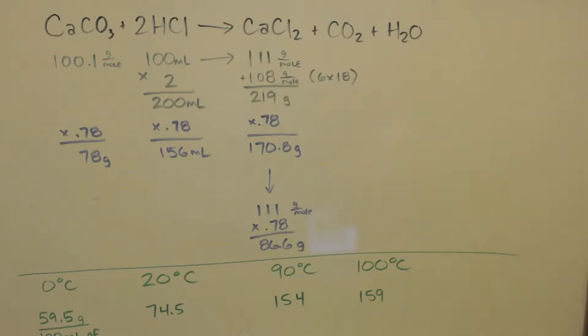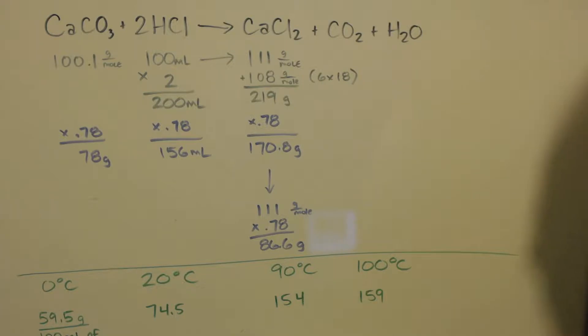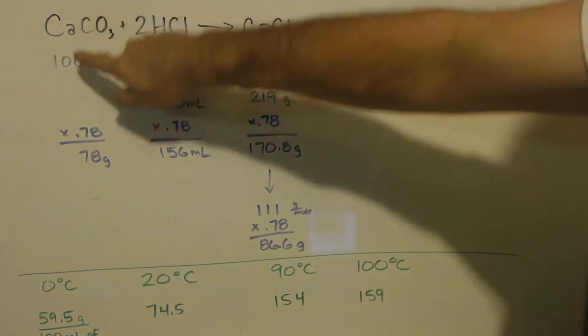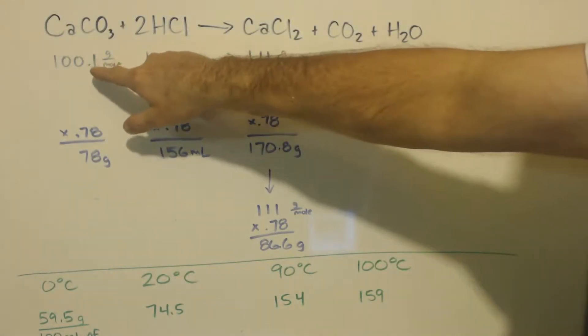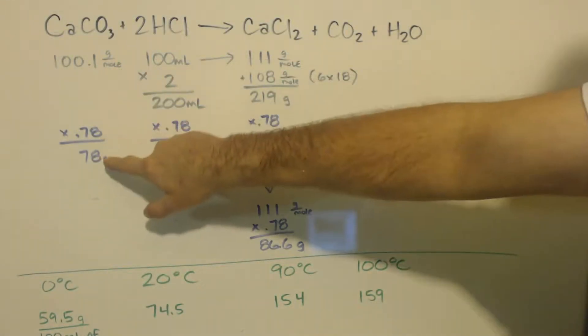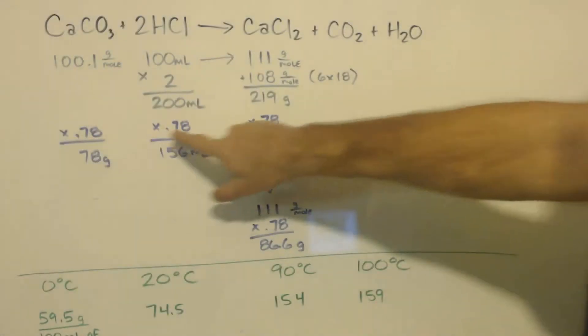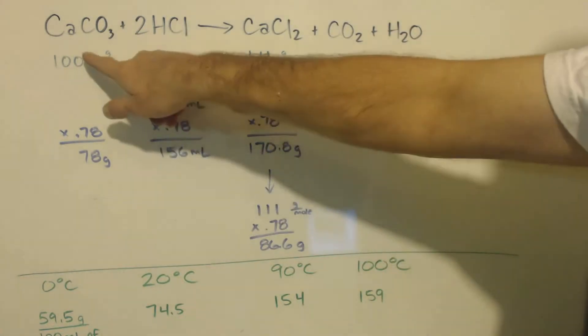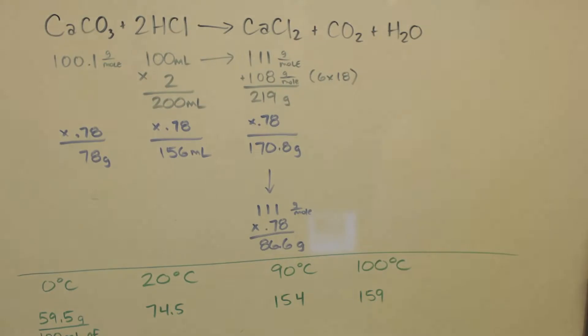All I had was 78 grams of calcium carbonate, so that made my numbers go according to that. Here's my molar masses. Since I had 78 grams, that's 78 percent of 100, so I took 0.78 times everything.